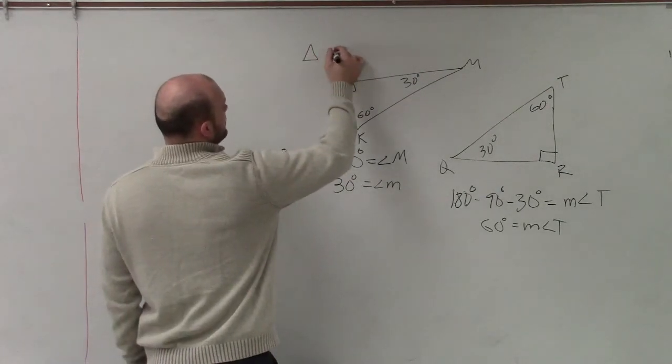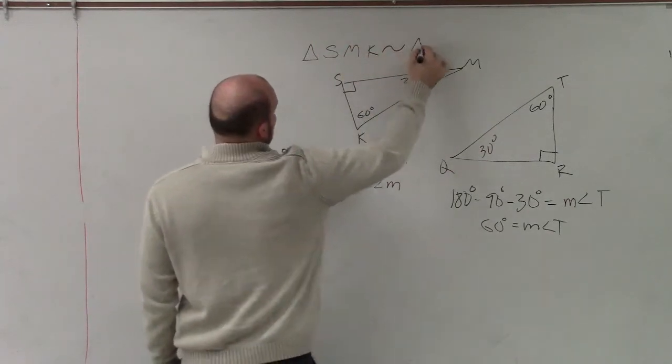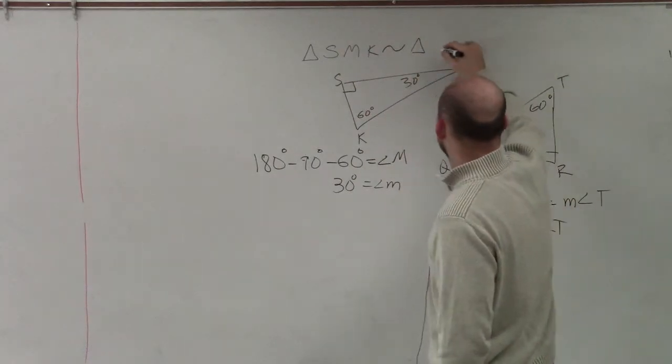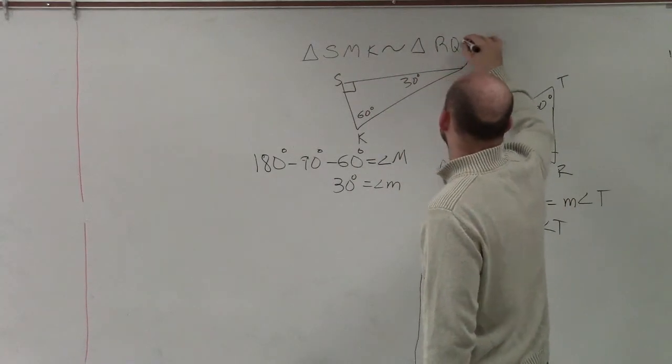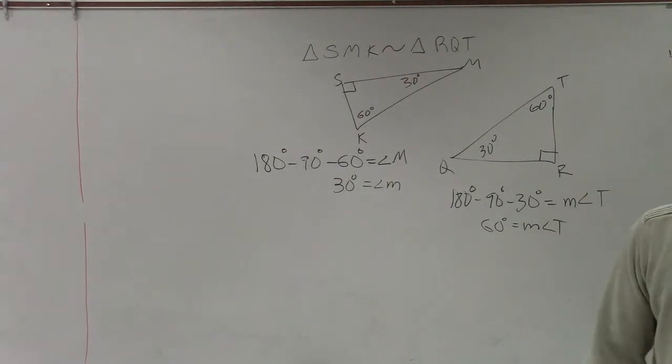So you'd write triangle S, M, K is similar to triangle R, Q, T. That's it.